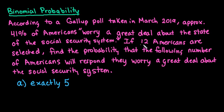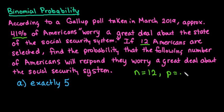We also know it's binomial because we have a fixed number of trials — exactly 12, so n = 12 — and we are given the probability of success, which remains constant for all people. Each person asked is independent of the others, so all conditions are met.